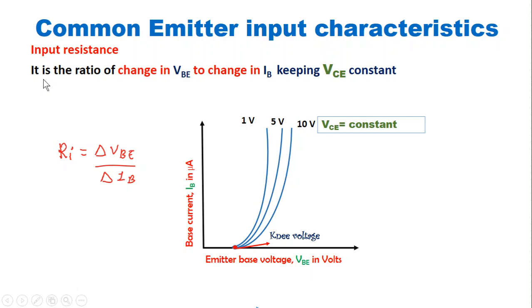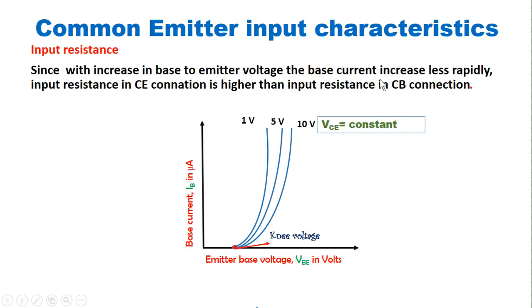The input resistance is the ratio of change in base to emitter voltage to change in base current, keeping collector to emitter voltage constant. Since with the increase of base to emitter voltage the base current increases less rapidly, the input resistance in common emitter connection is higher than the input resistance in common base connection.